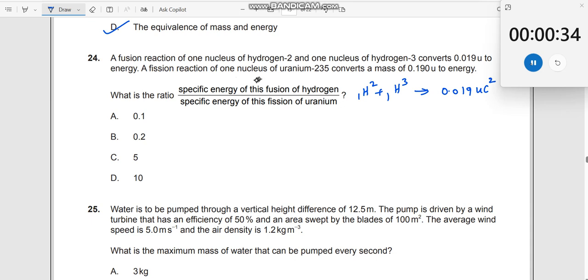Fission reaction of one nucleus of uranium-235. So when you have uranium-235, this will give rise to 0.19Uc² is the energy.